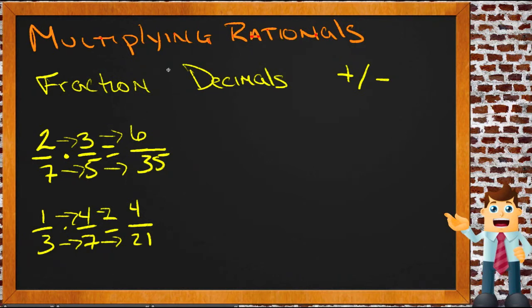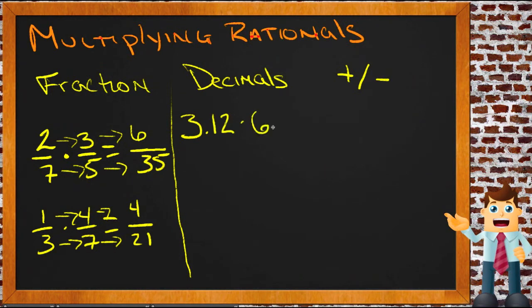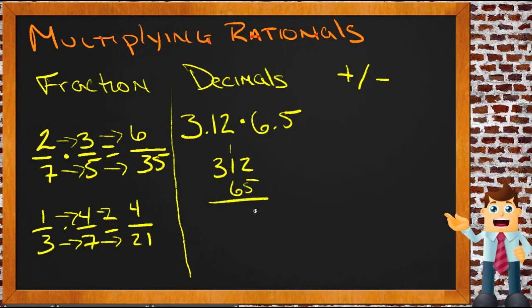Multiplying decimals is really a matter of what you don't do — you don't worry about the decimal at the beginning. For example, 3.12 times 6.5: when multiplying decimals, ignore the decimal point and just do the multiplication as if these were whole numbers. So this becomes 312 times 65.